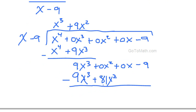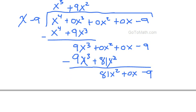Okay, we got minus, plus, and what do we got? We got 81x squared plus 0x minus 9. So you see why we put these zeros in here, okay?